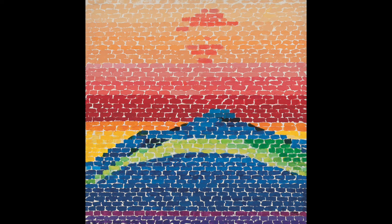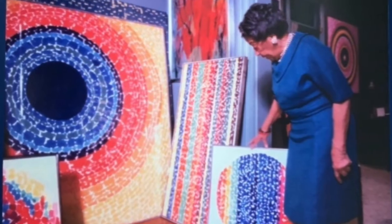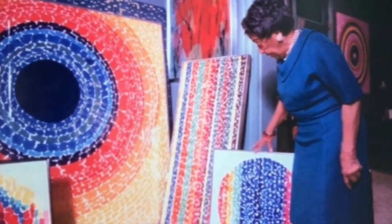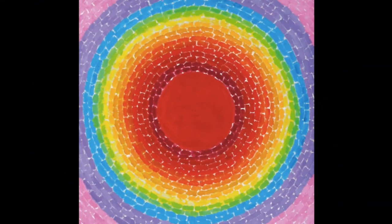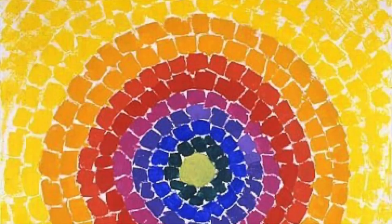Later she started painting these beautiful artworks filled with colorful lines that look like they're moving and growing. These kinds of circles are called concentric circles. Say concentric circles.